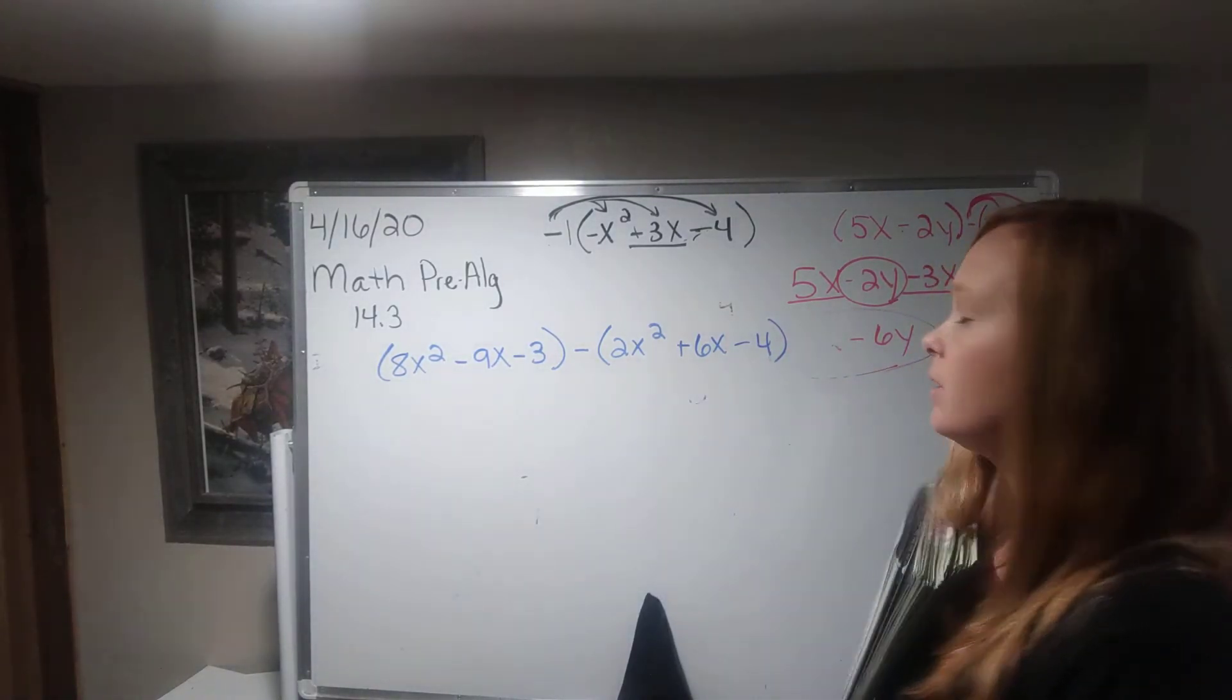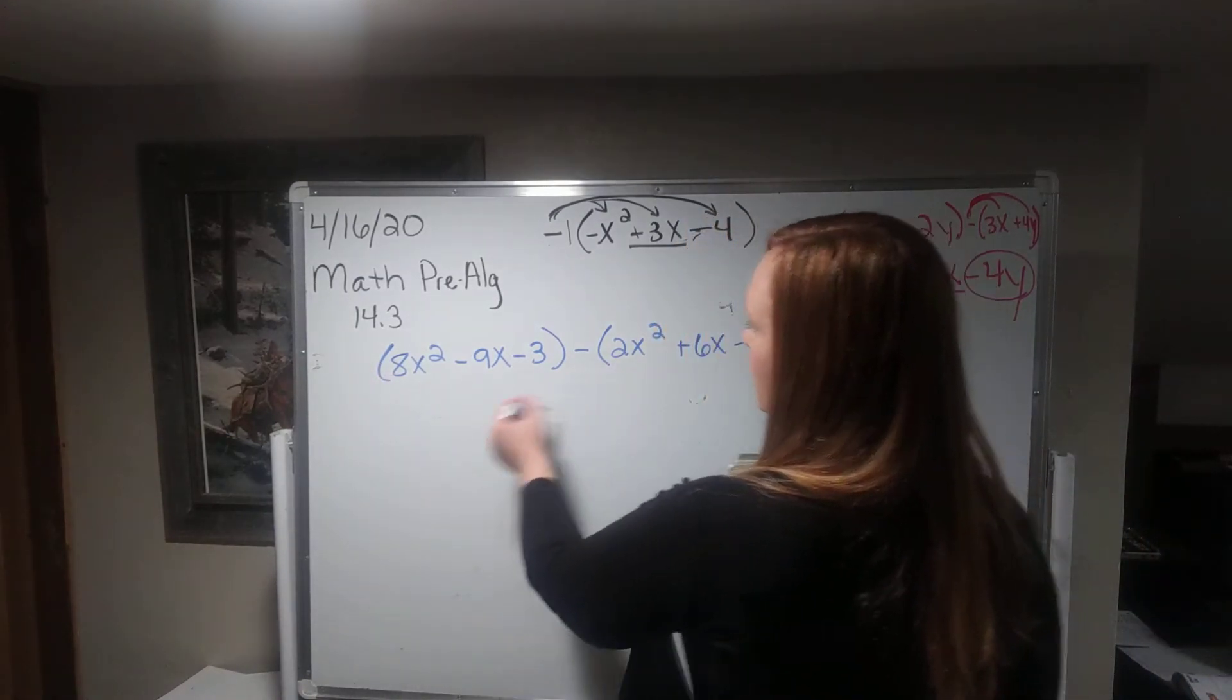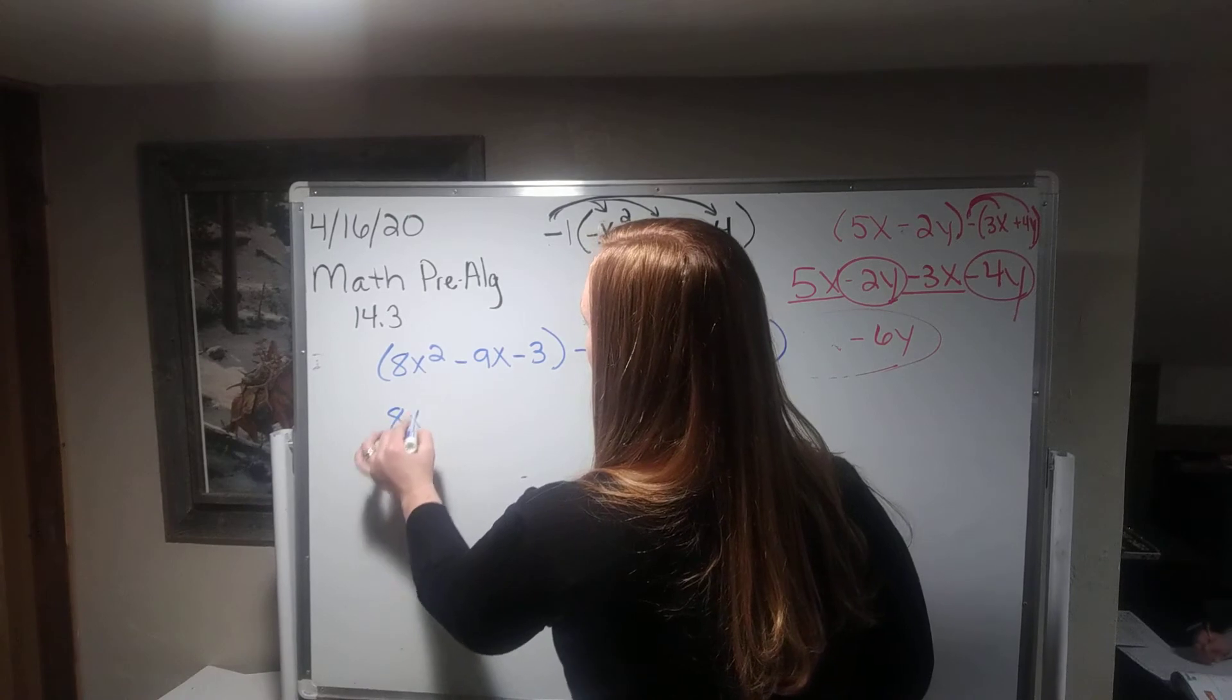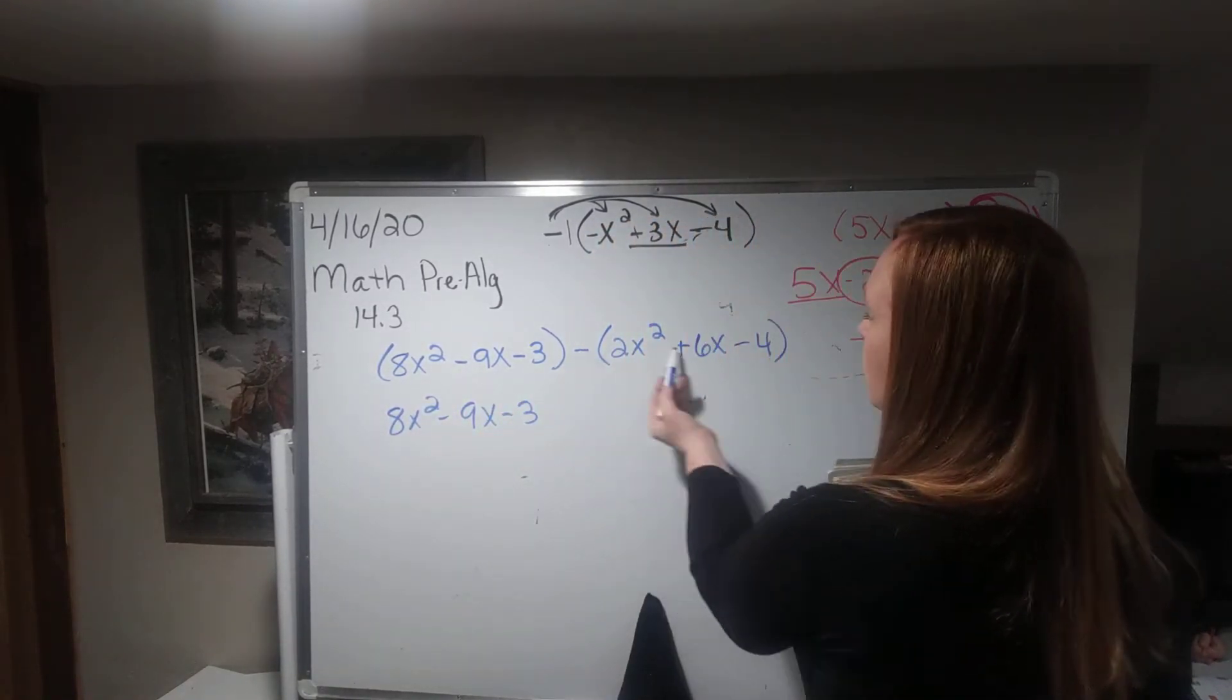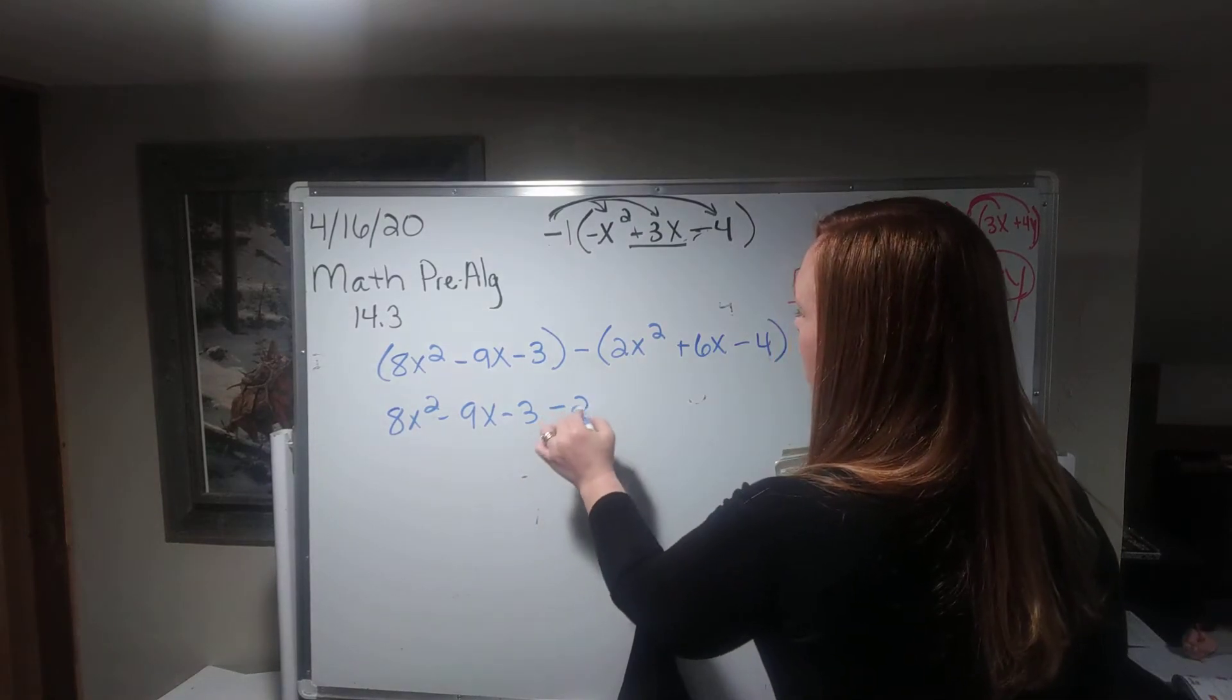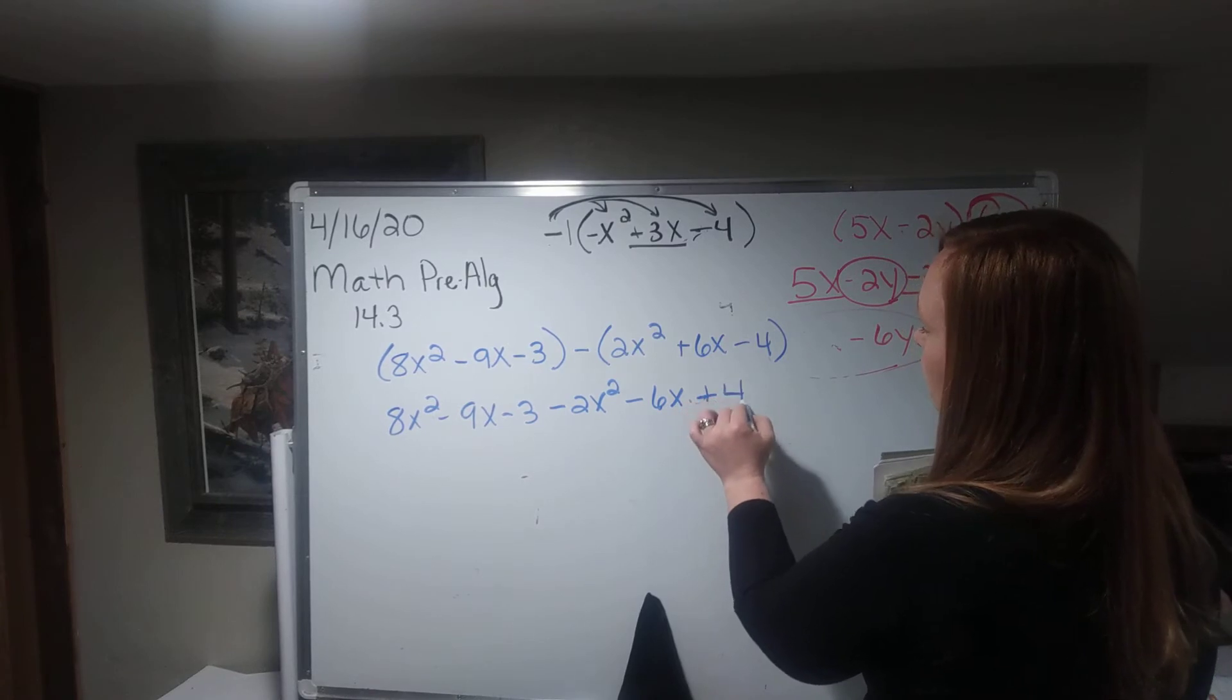Okay. Okay, so now I have a positive on the outside of this parentheses, so I can drop the parentheses like we were doing yesterday. But I need to distribute this in. So minus 2x squared minus 6x plus 4.